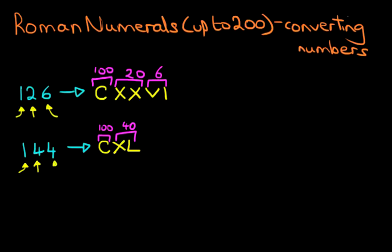So, now, the last one is the units, which is 4. How do we write 4? It is 1 less than 5. So, that is how we write down 144. In Roman numerals, it is C, X, L, I, V.